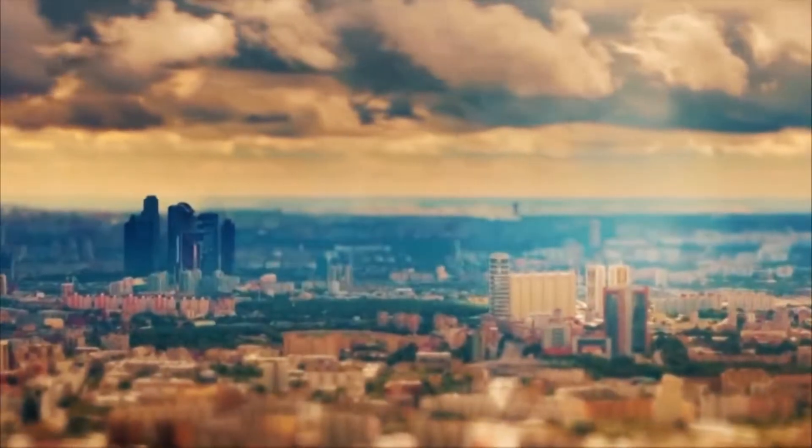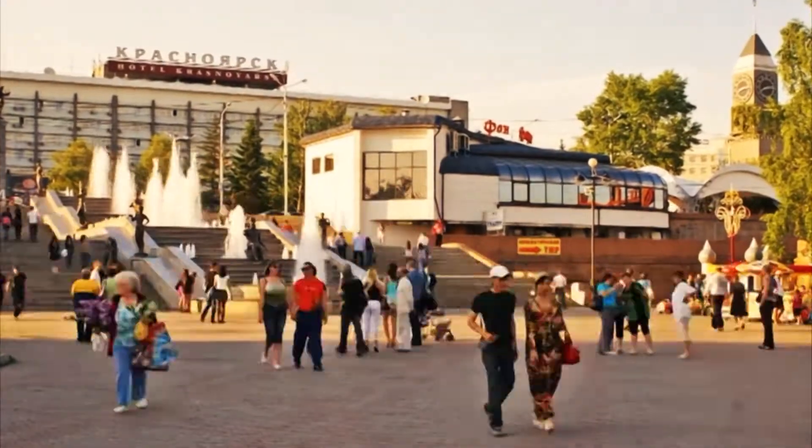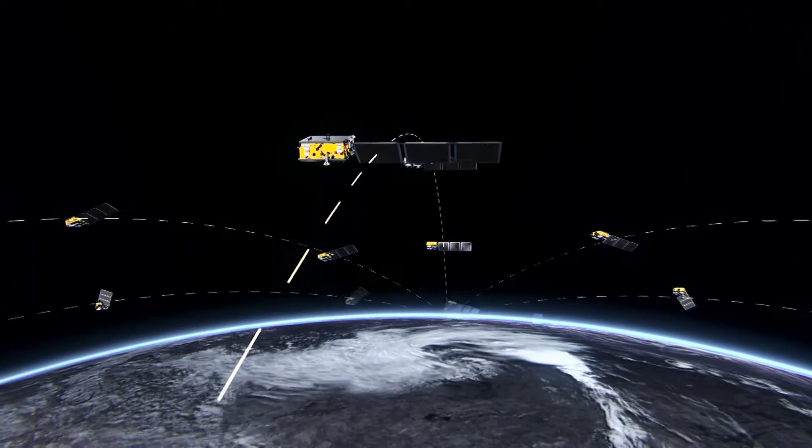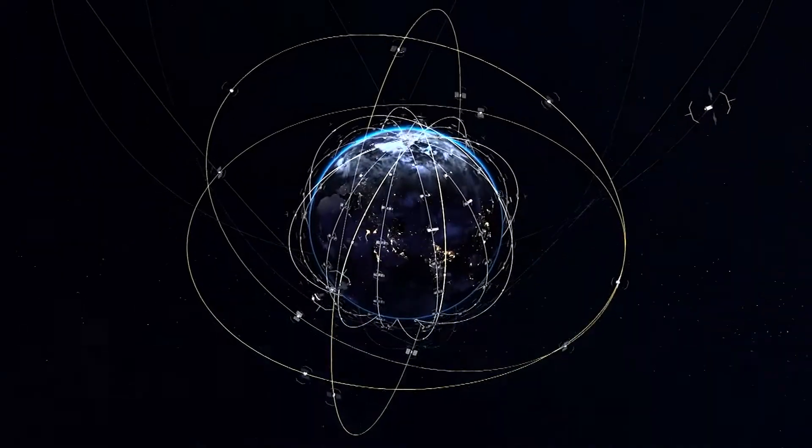Each of us has a road to take. Satellites are no different than humans in this way. The roads which numerous satellites take around the Earth are called orbits.